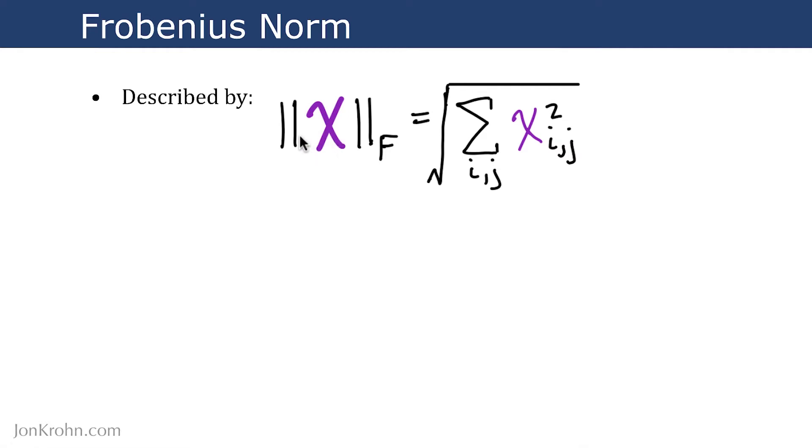So it's a matrix X, and we have the same kind of double absolute value looking bars around the tensor, in this case a matrix. And we specify that it's a Frobenius-type norm with this capital letter F as subscript.